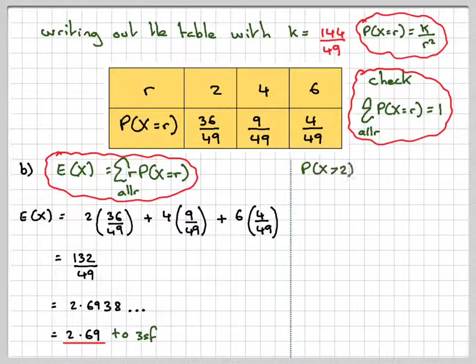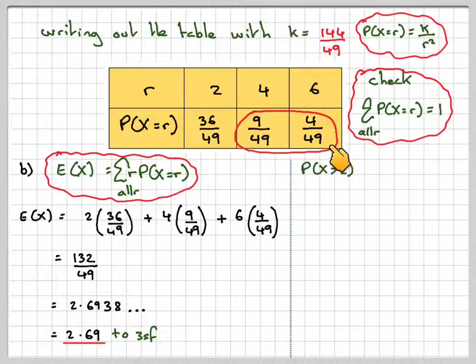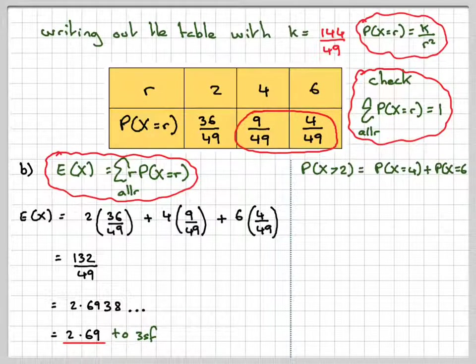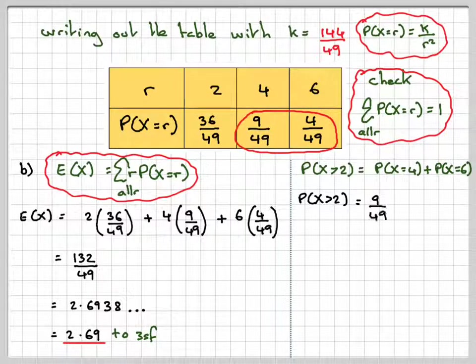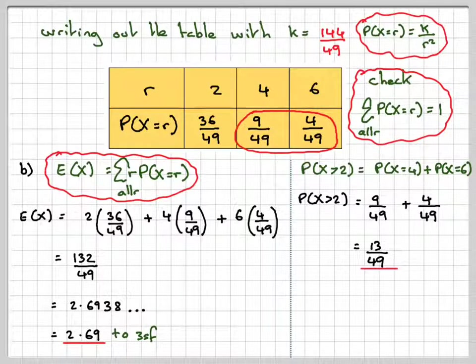We are asked to find the probability of X being greater than 2. That's going to be those two values. All we need to do is do the probability of X is equal to 4 plus the probability of X is equal to 6. We add those together. So it's 9/49 plus 4/49, which gives me 13/49.